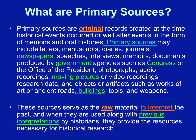Primary sources may also include interviews, memoirs, documents produced by government agencies such as Congress or the Office of the President, photographs, audio recordings, moving pictures or video recordings, research data, and objects or artifacts such as works of art, ancient roads, buildings, tools, and weapons. These sources serve as the raw material to interpret the past, and when used along with previous interpretations by historians, they provide the resources necessary for historical research.